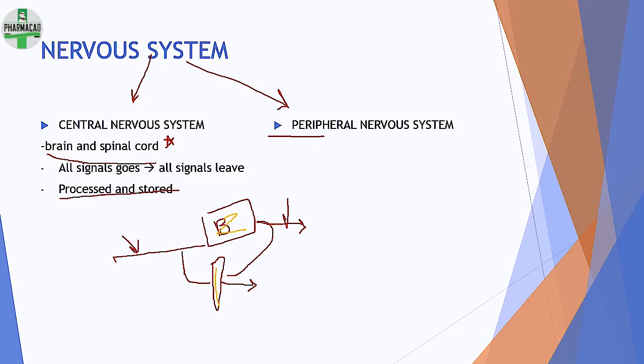Everything else — the receiving of signals, the giving off of activity — all that comes under the peripheral nervous system. The word 'peripheral' means around or on the sides, whereas 'central' is the core in the middle.